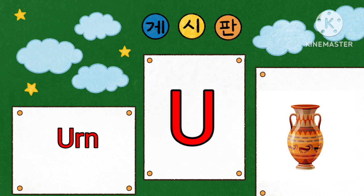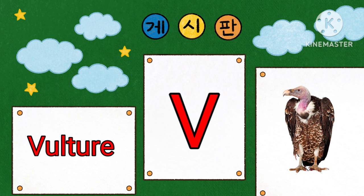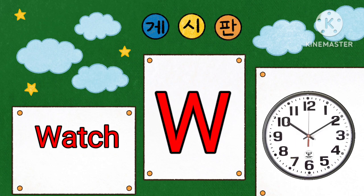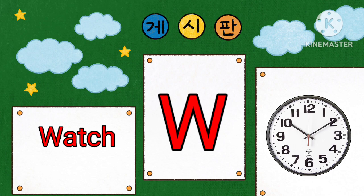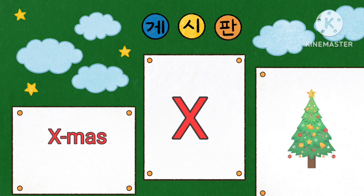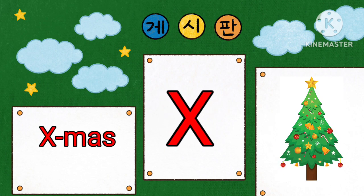U is for Yarn. V is for Vulture. W is for Watch. X is for Xmas Tree.